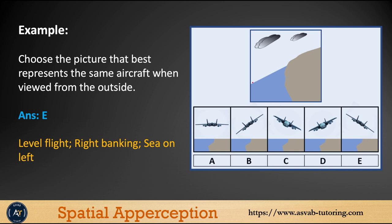The horizon is not down, so that means it is a level flight, right banking. You can see C on the left, so that represents C. The answer option is letter E.